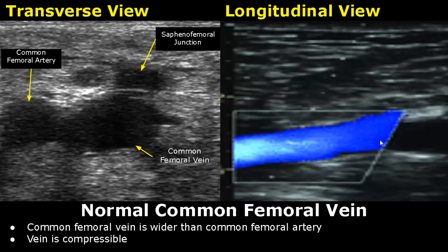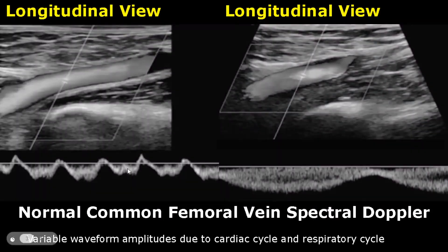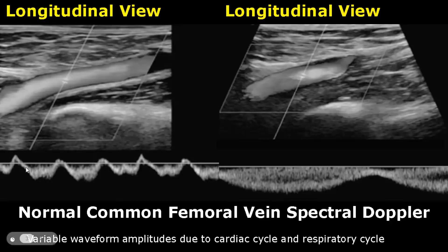Here is a longitudinal view of the common femoral vein with color Doppler. The blood is flowing towards the heart. The spectral Doppler waveform of the common femoral vein is variable. These variations are due to the cardiac cycle and the respiratory cycle. Normally we will see these types of waveforms.